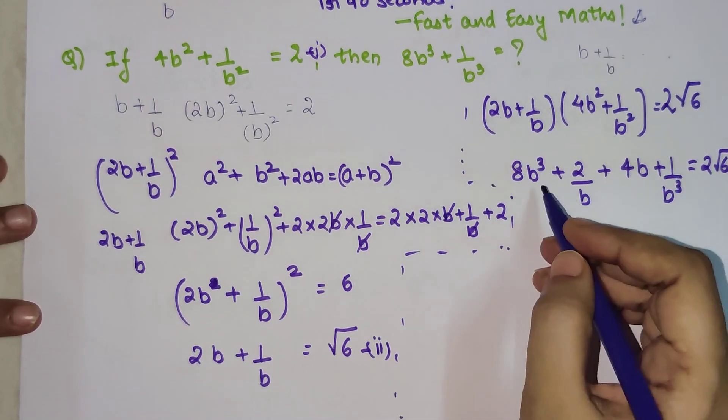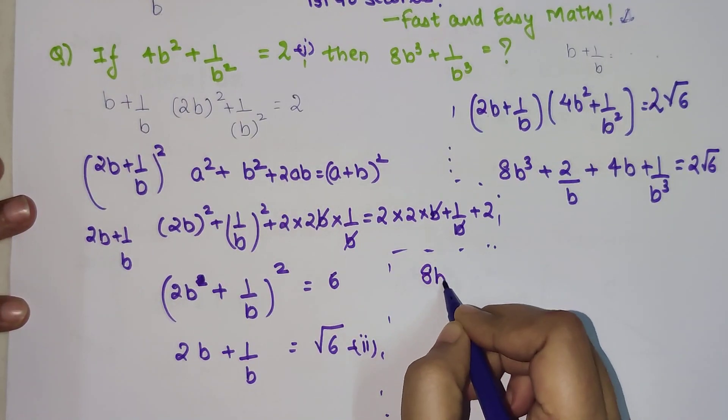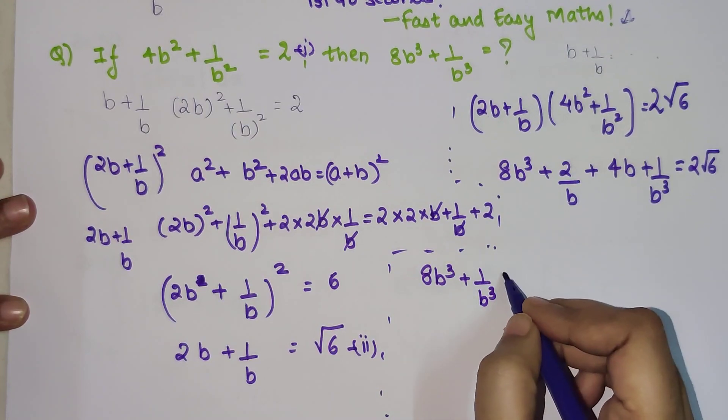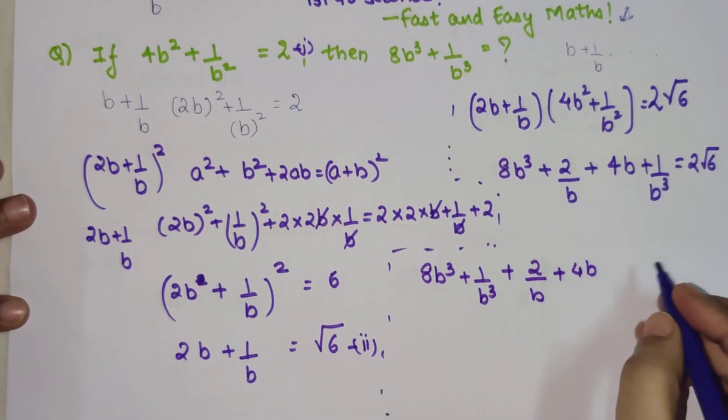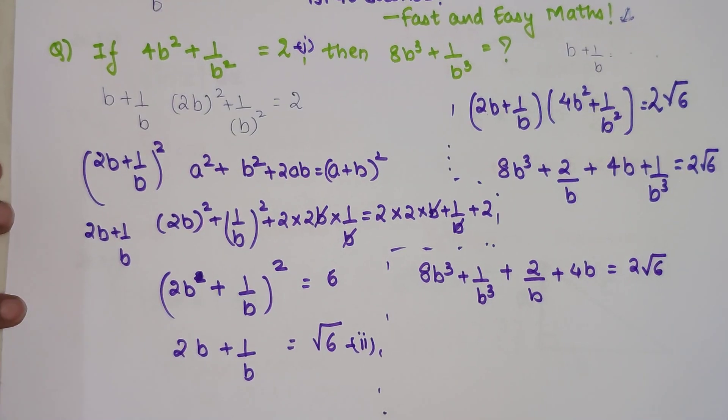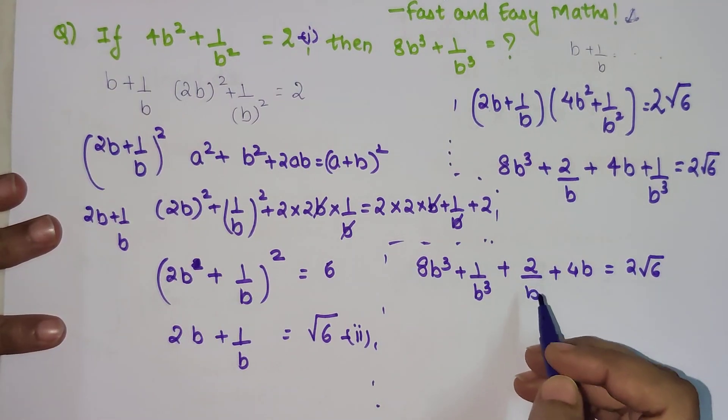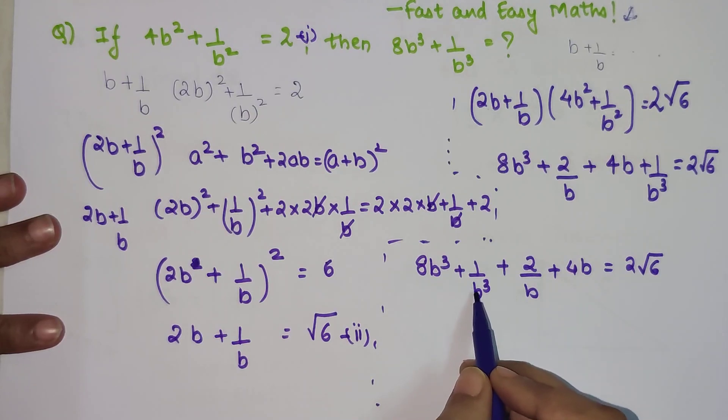So now let's write down the terms which we want together. So we will have 8b³ + 1/b³ together and then we have 2/b + 4b. This is still equal to 2√6. Now if you look, whatever we are looking for is already there, but we don't want this.